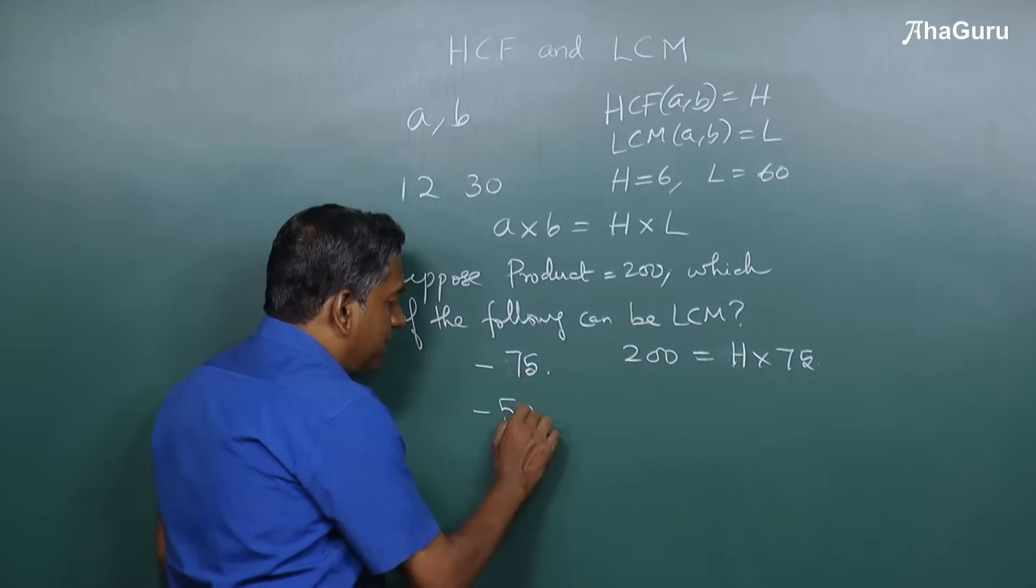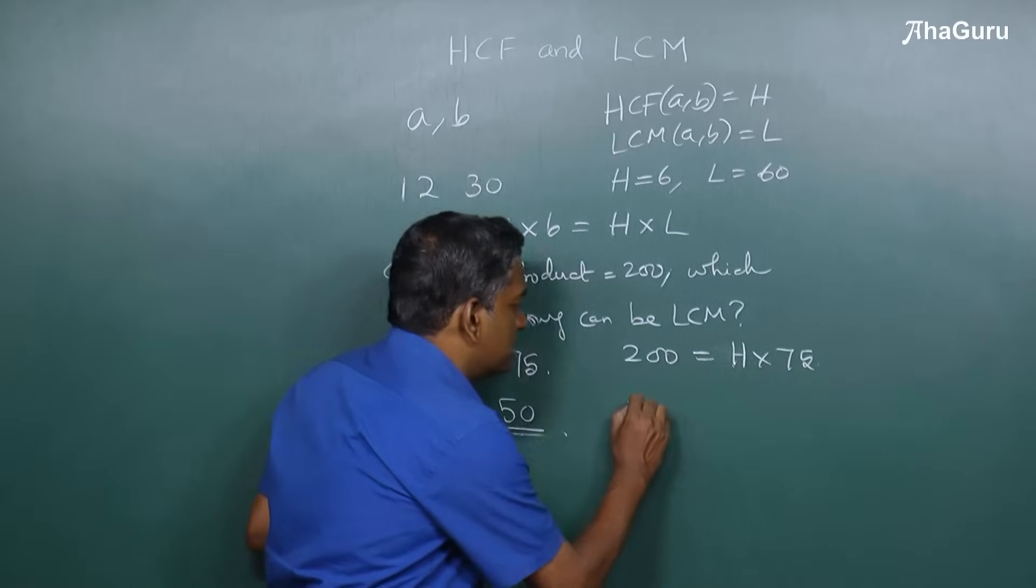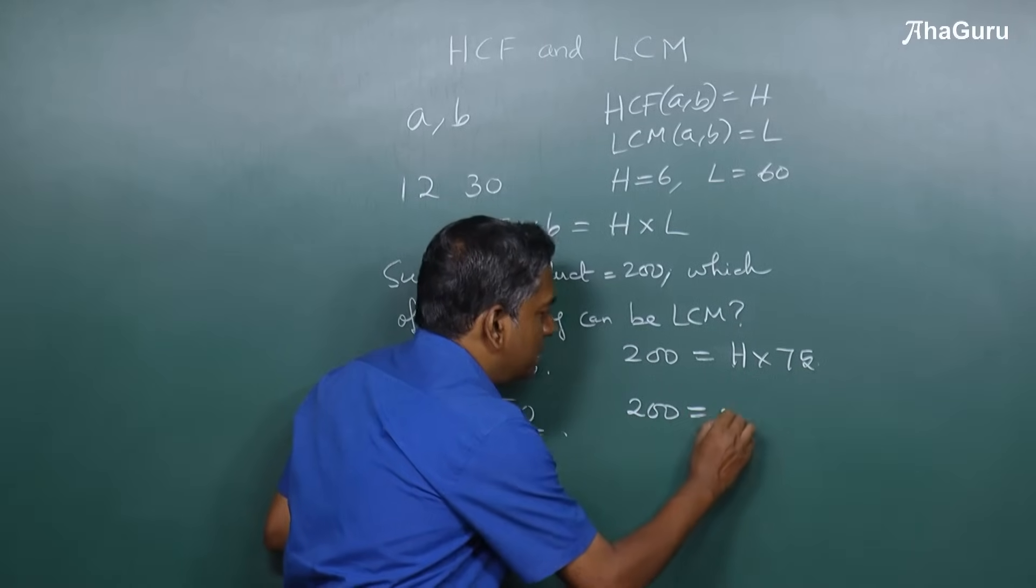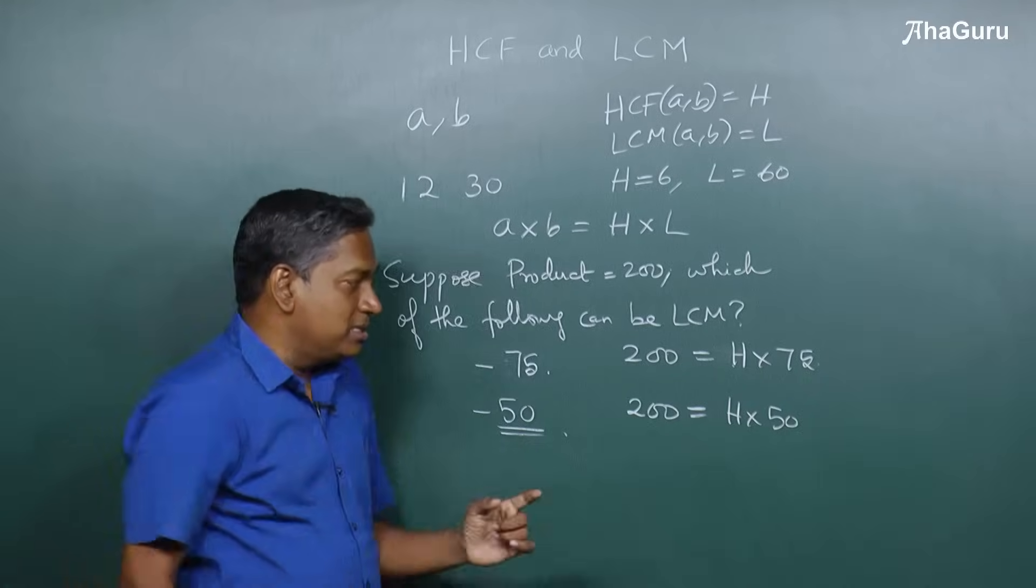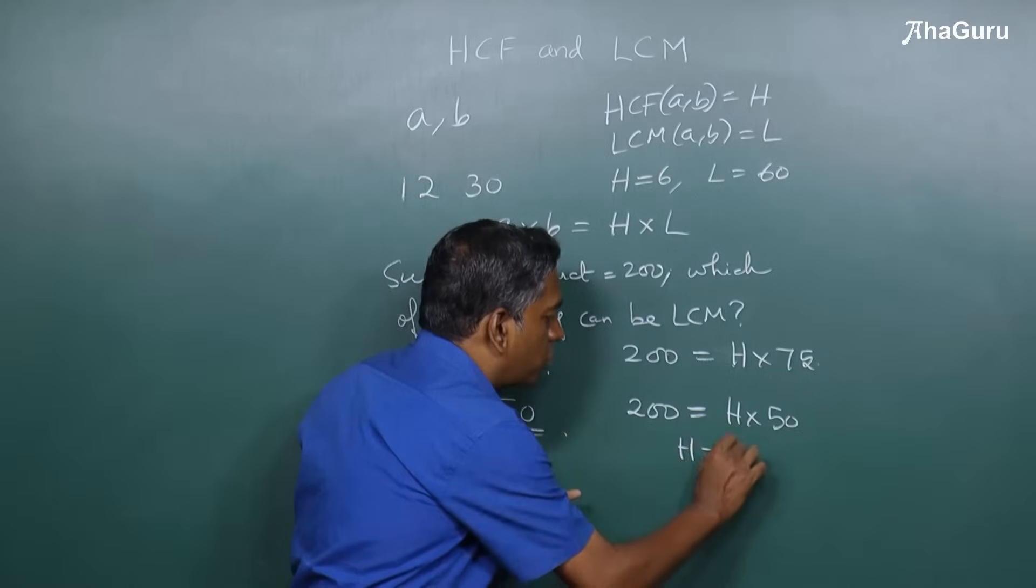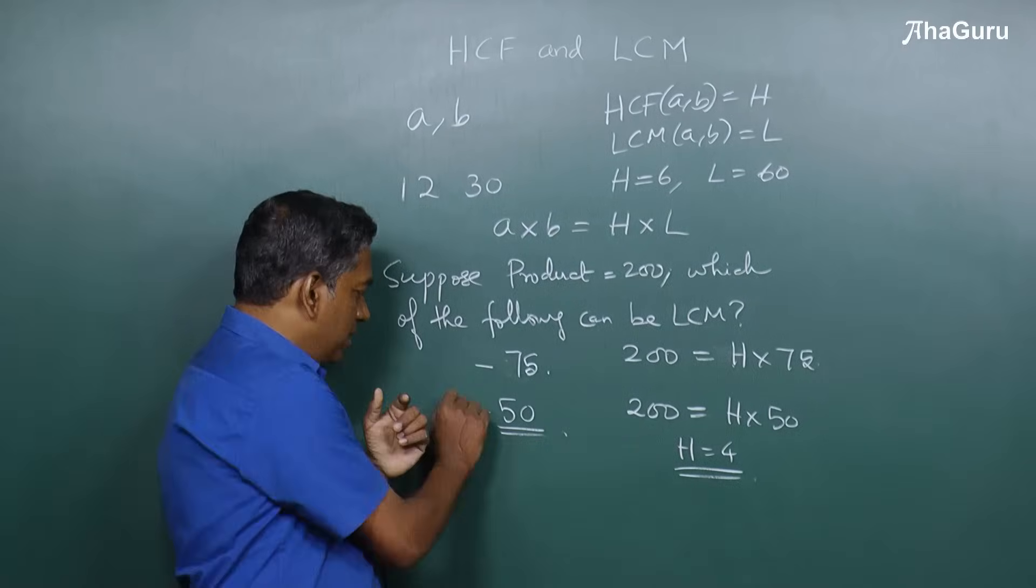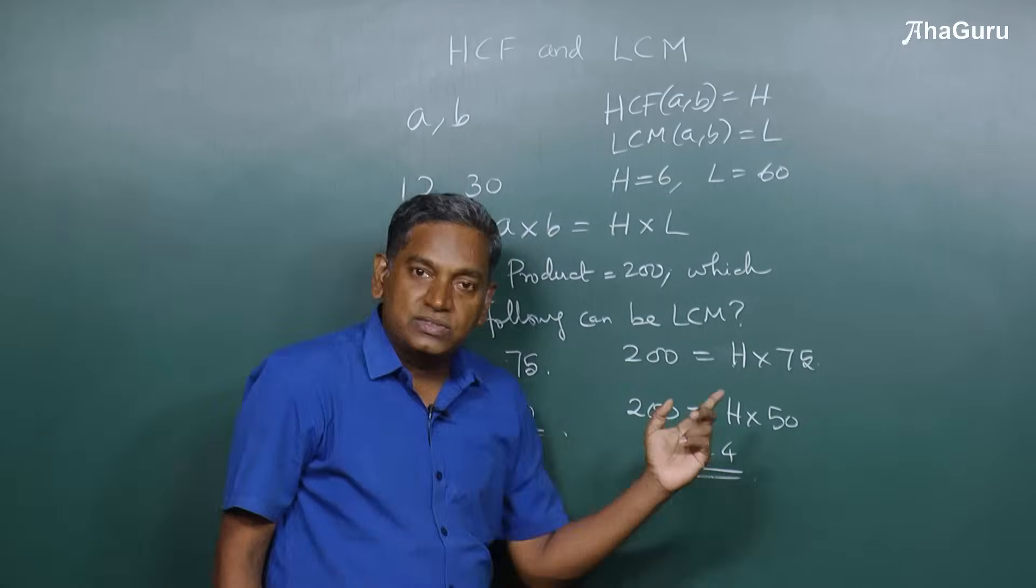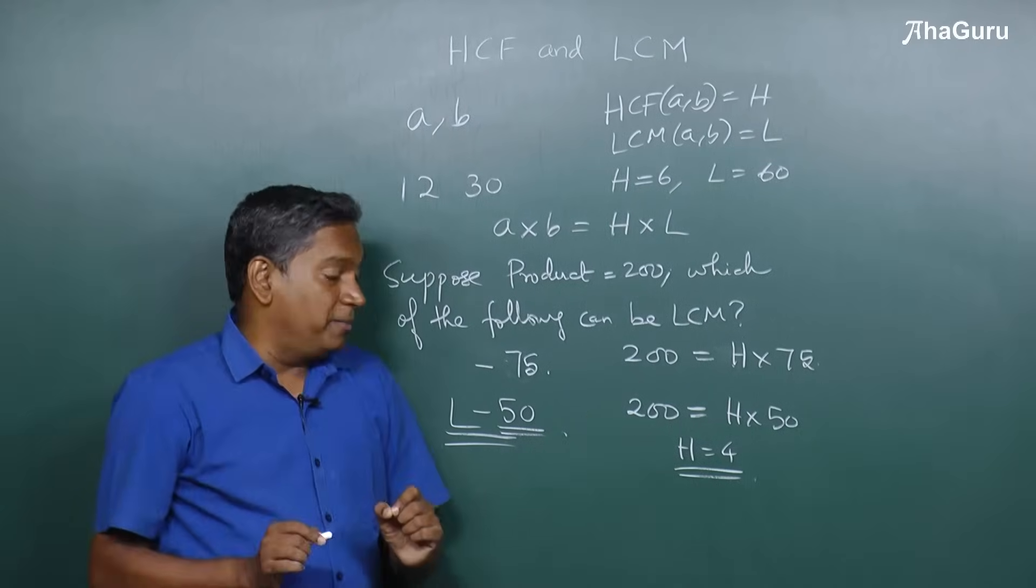But suppose the choice given is 50. Can the LCM be 50? What you will see is 200 is H times 50, and when you do this you will get H is equal to 4, which is actually a natural number. So many people think the LCM is 50 and HCF is 4 can actually work, but there is a problem.